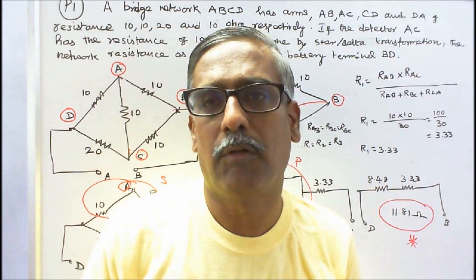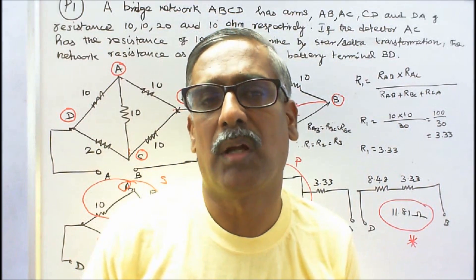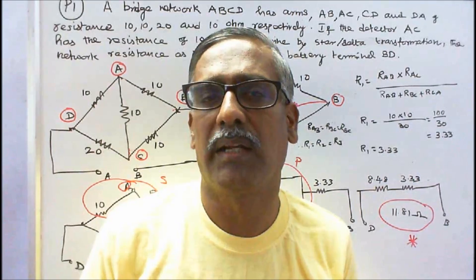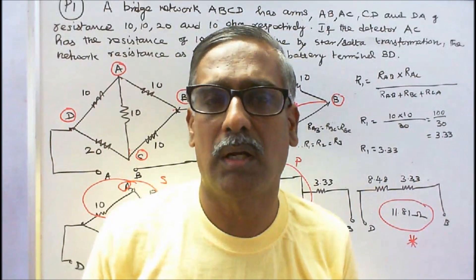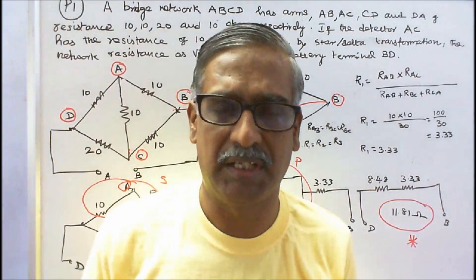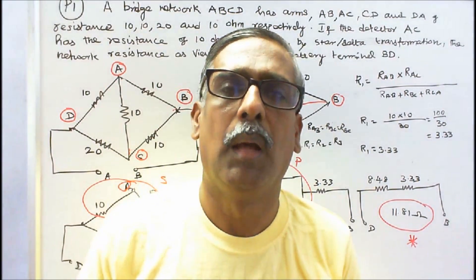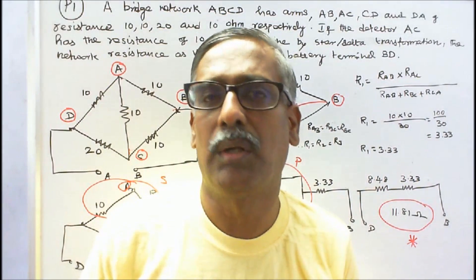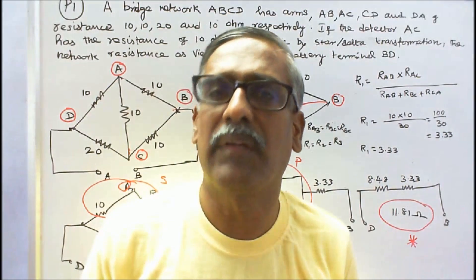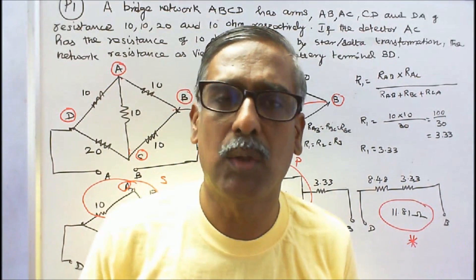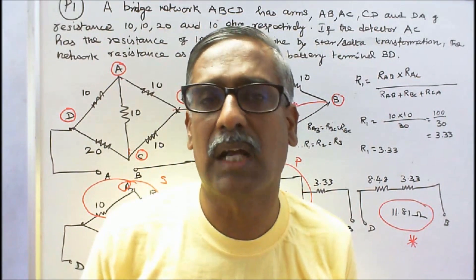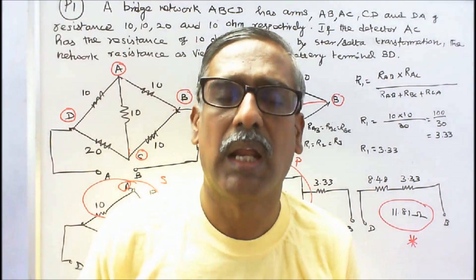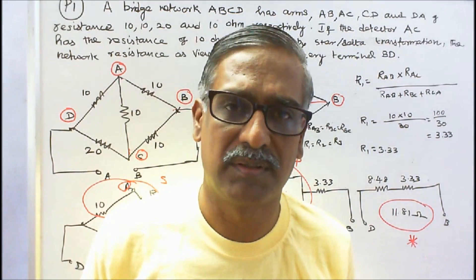In this class we work out five problems on star-delta and delta-to-star transformation. By using this technique, we can reduce the network and easily find the total resistance across any two points. Now we will work out five problems.